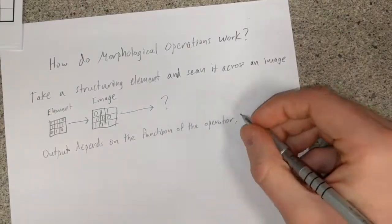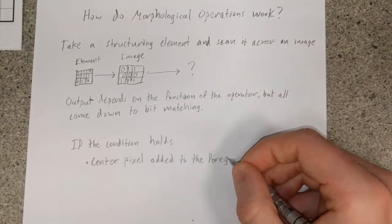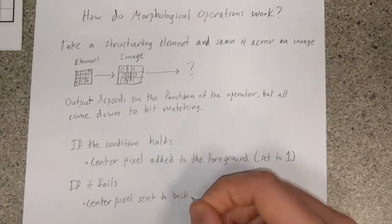Either the conditions dictated by the set operation hold, leading to the central pixel being set to 1, or the conditions fail, leading to an assignment of 0.